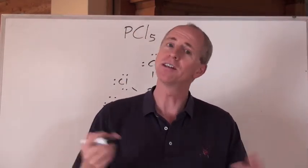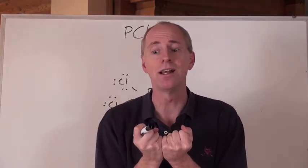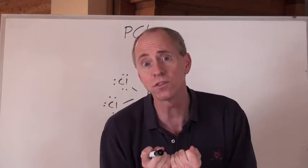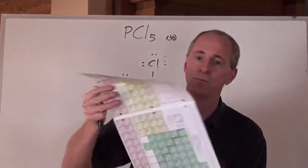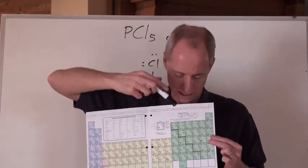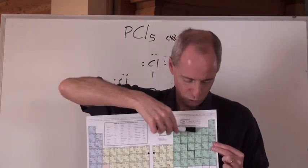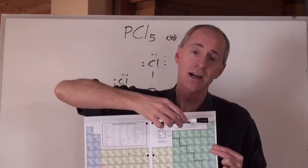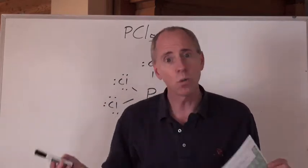Okay, so now here's an exception. Some elements can exceed the octet rule. As a matter of fact, most of the non-metals can exceed the octet rule. The ones that can't are located, well, hydrogen can't because it can only make a duet, but in period number 2 of the periodic table, like nitrogen and oxygen and fluorine and carbon. Now, why is that?